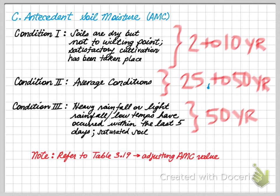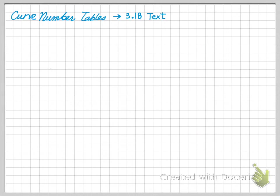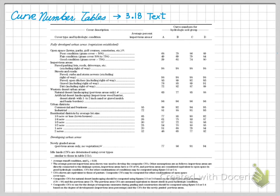If you refer to Table 3.19, you can see how to adjust AMC values. All AMC values provided in the table in your text on Figure 3.18 are shown for AMC 2. Thus, if you wanted to do an analysis for a 100-year storm, you will need to use Table 3.19 to convert it.